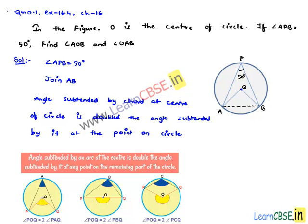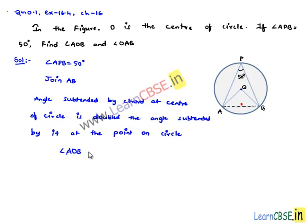Therefore, angle AOB which is angle subtended by AB at the center will be equal to 2 times angle APB, which is subtended at the point on the circle, which is equal to 2 times 50 degrees. So, 2 times 50 degrees is 100 degrees. Therefore, we got angle AOB is equal to 100 degrees.